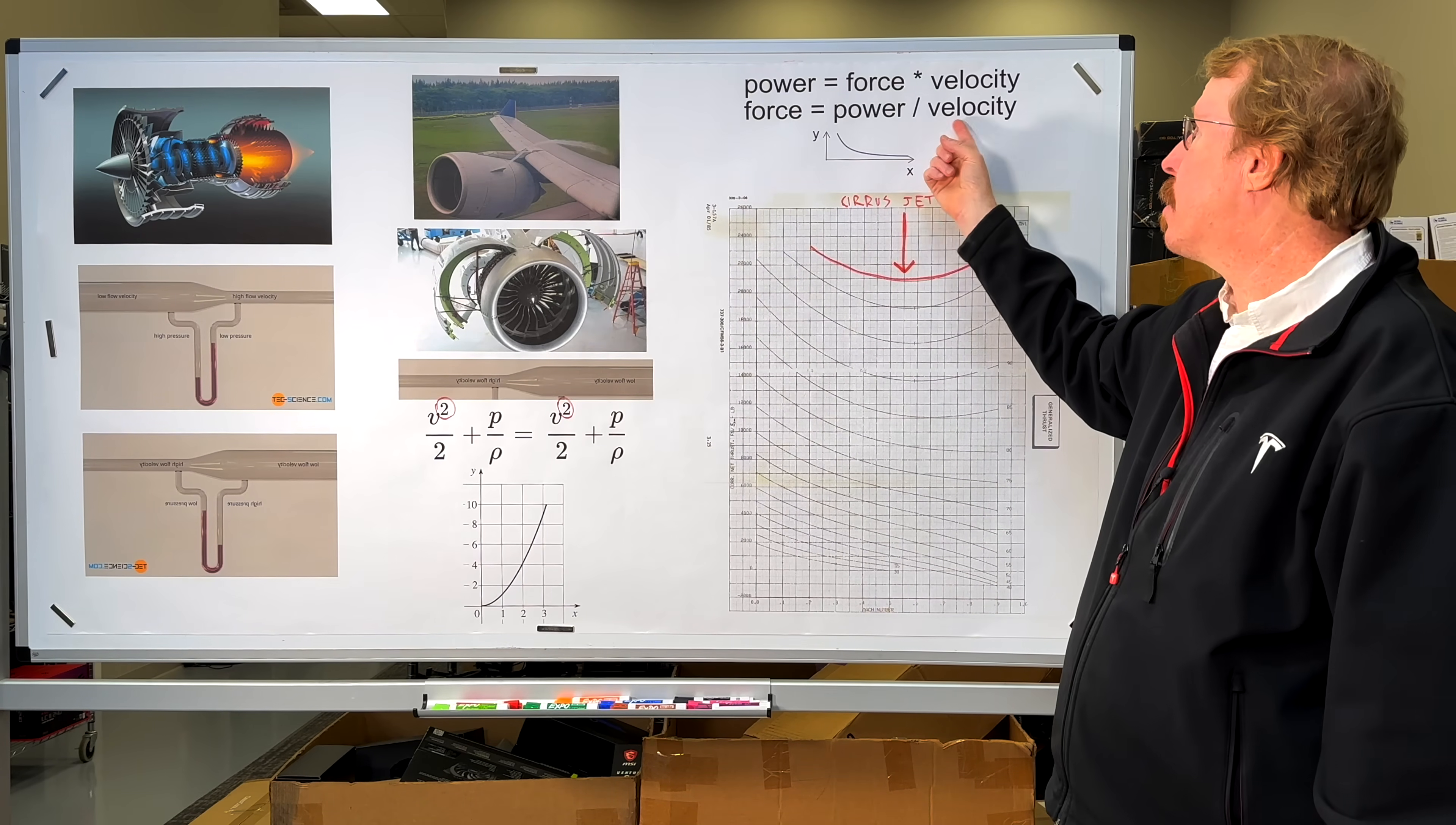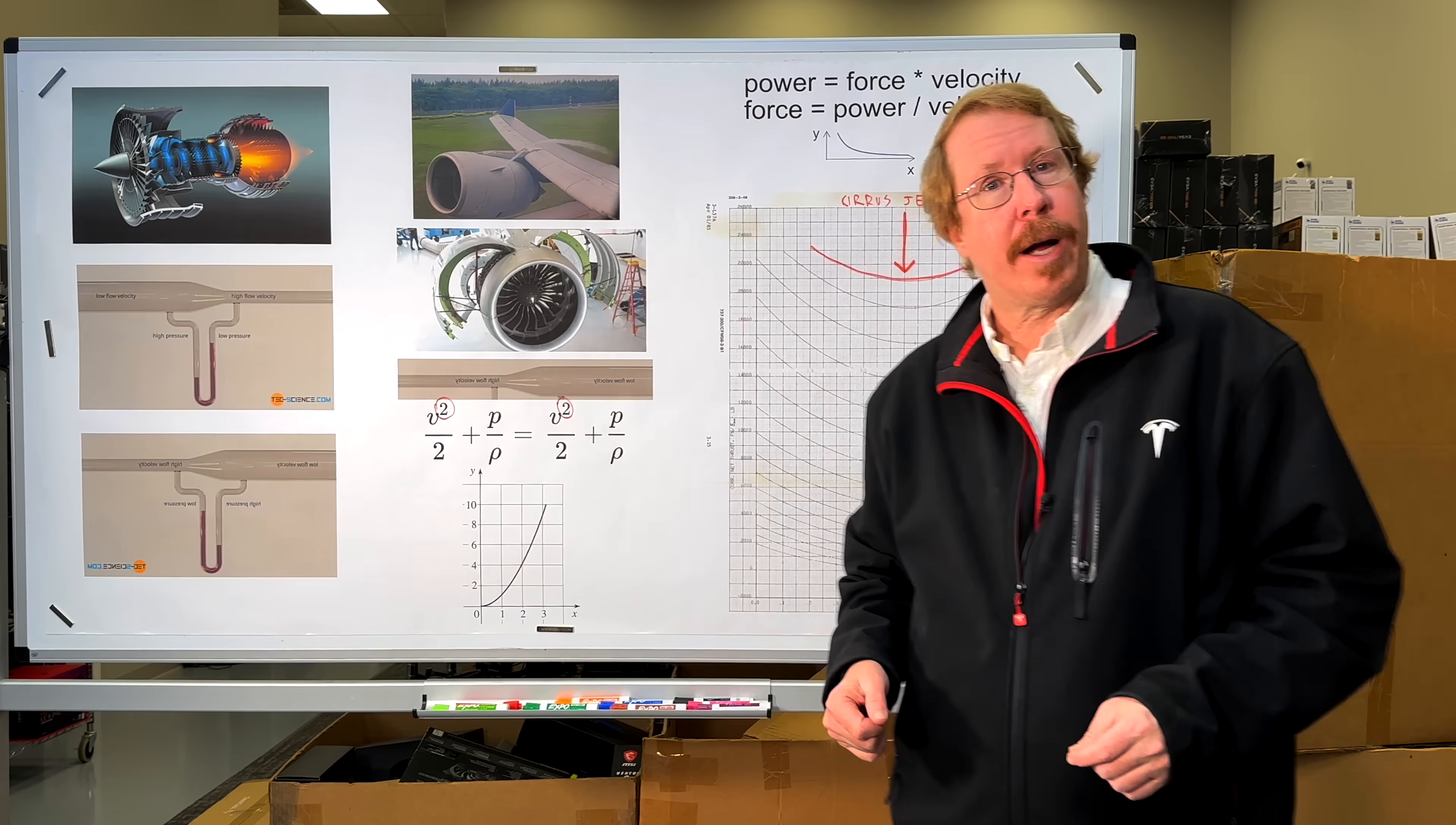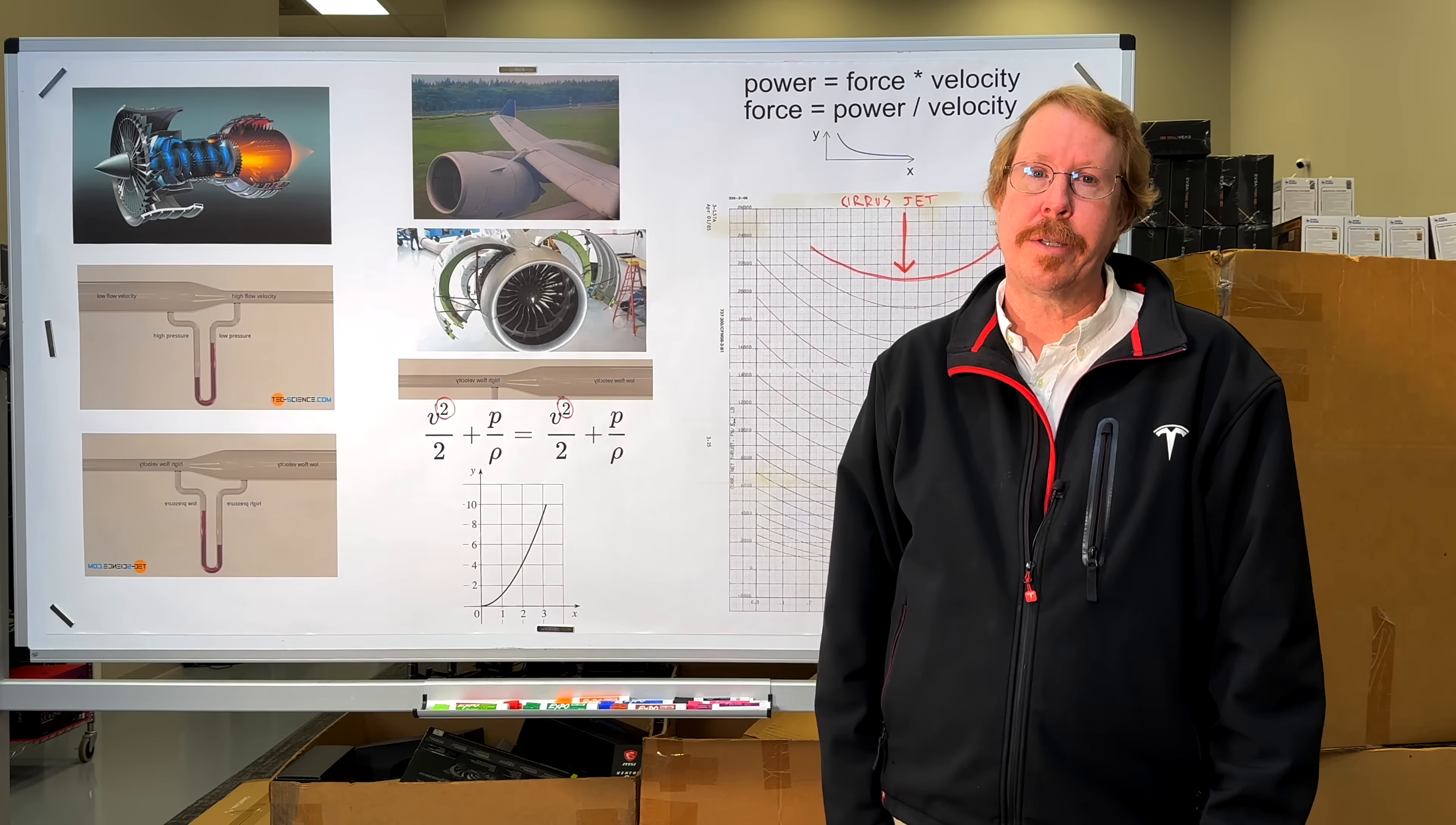If you go twice as fast for a given power, you're only going to get half the force. You feel this in your car. If you're going twice as fast on that on-ramp for a given horsepower, you're only going to have half the acceleration. You'll probably have half the acceleration at 60 miles an hour than you had at 30 miles an hour. You can see the graph of this here. As the speed builds, the acceleration comes down. Or, put another way, as the velocity builds, for a constant power, the force comes down. As the car speeds up, the acceleration bleeds off.